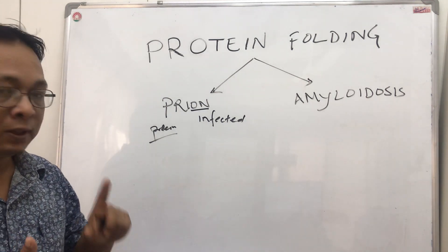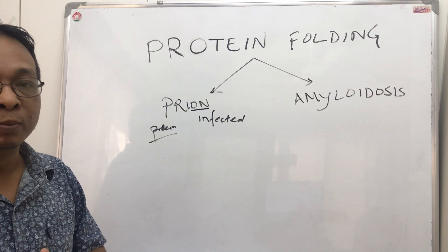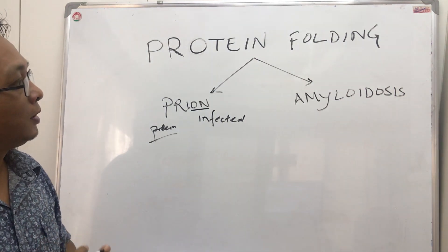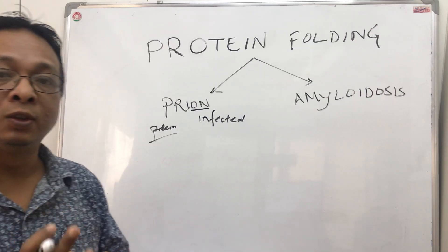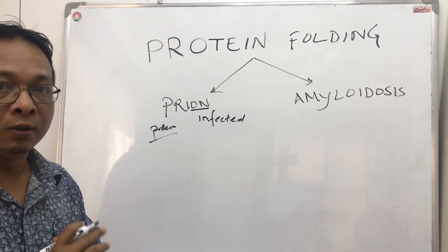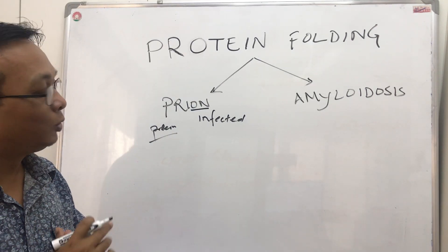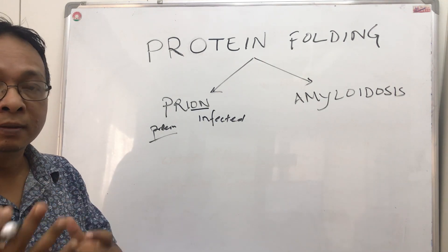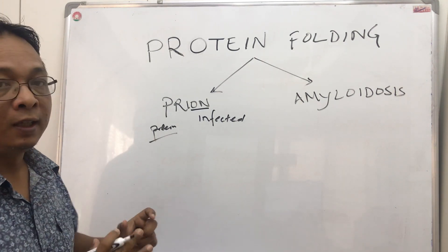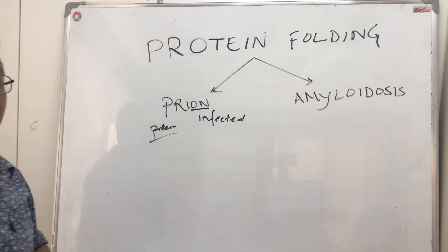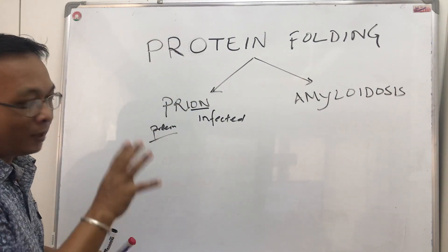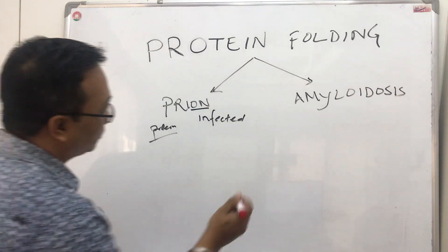Prions can cause difficulty in walking, difficulty in movements, and dementia, among other things. Amyloidosis is an aggregation of amyloids — misfolded proteins — which can lead to many diseases affecting the heart, the kidneys, and other organs. It is all associated with protein misfolding.